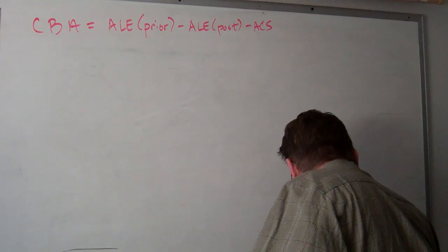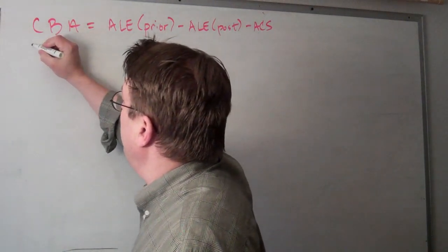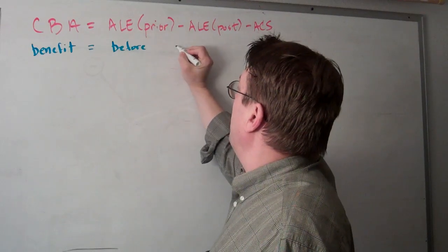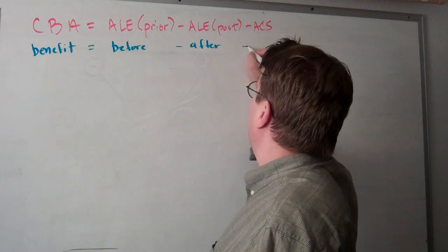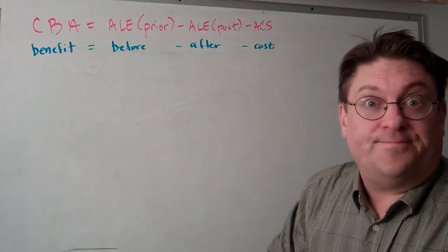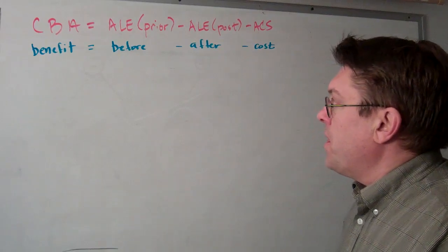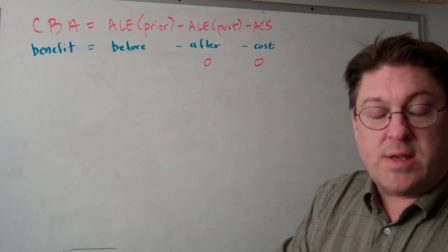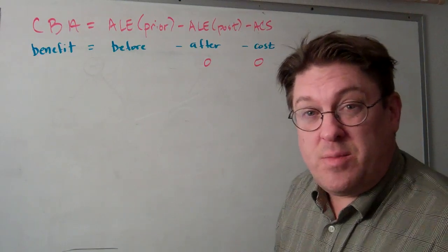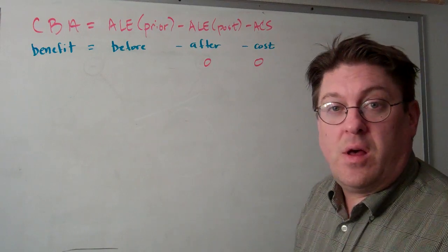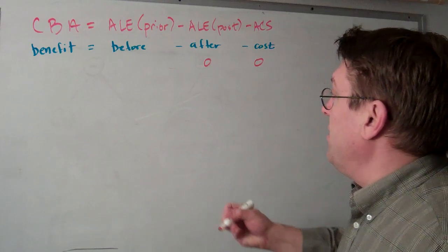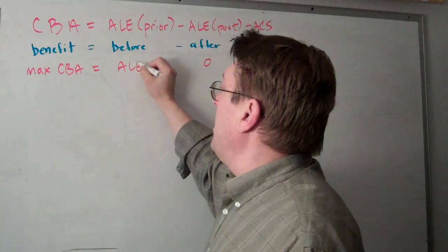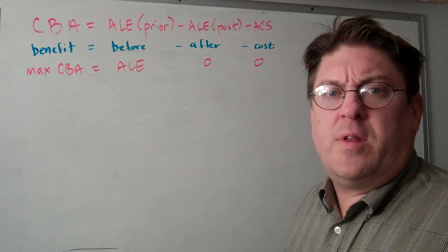You can think of this as benefit equals before minus after minus the cost of implementing the system, in simpler language. We set ALE post and ACS to zero because we wanted to figure out the maximum possible cost-benefit. Basically, the maximum CBA equals the ALE prior to implementing the system. In other words, you can't save any more than you're losing now.